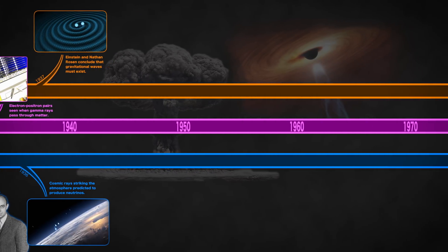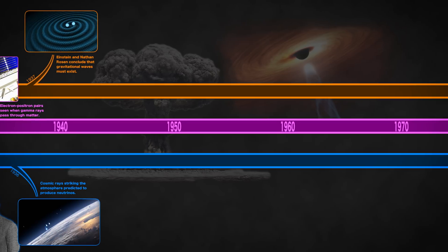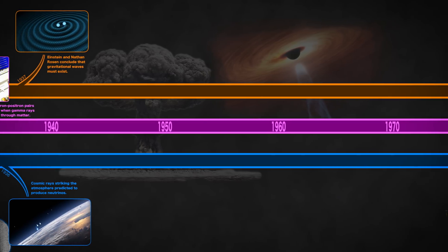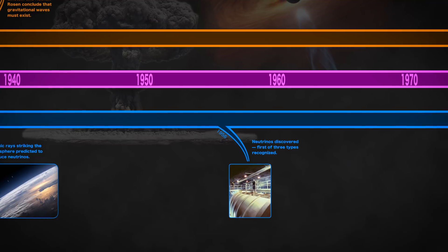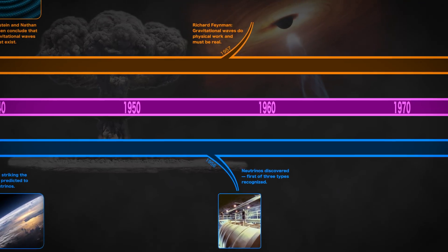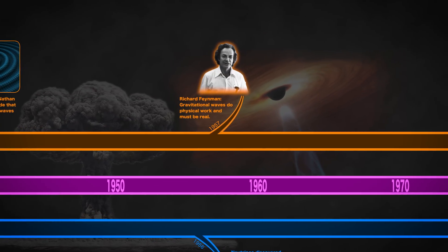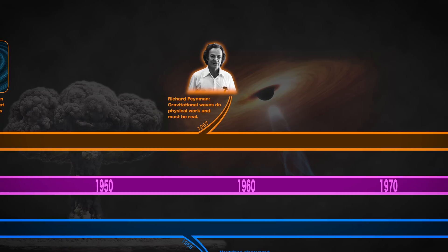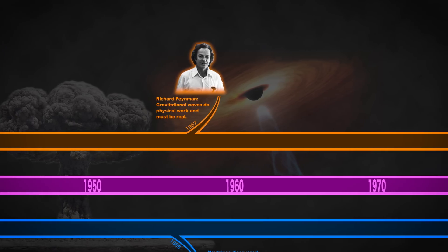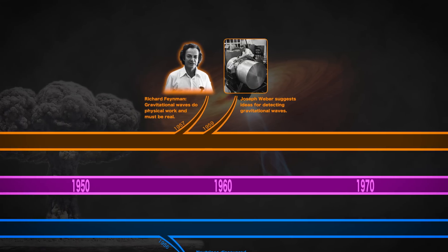Following World War II, technological advances permitted new kinds of observations. In the mid-50s, neutrinos were detected for the first time. Richard Feynman showed that gravitational waves must move matter, which means they're detectable. In a few years, the first efforts to do so began.